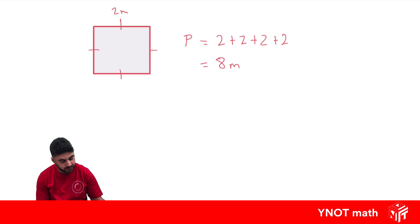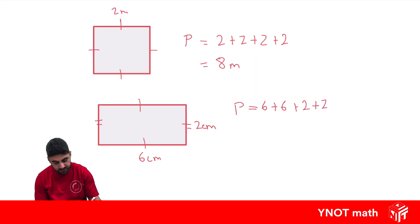Let's look at a rectangle. So let's say this is six centimeters and this is two centimeters. The perimeter is just going to be six plus six because there's two of them and two plus two because there's two of them, which is going to give us 16 centimeters for our total edges around the outside.